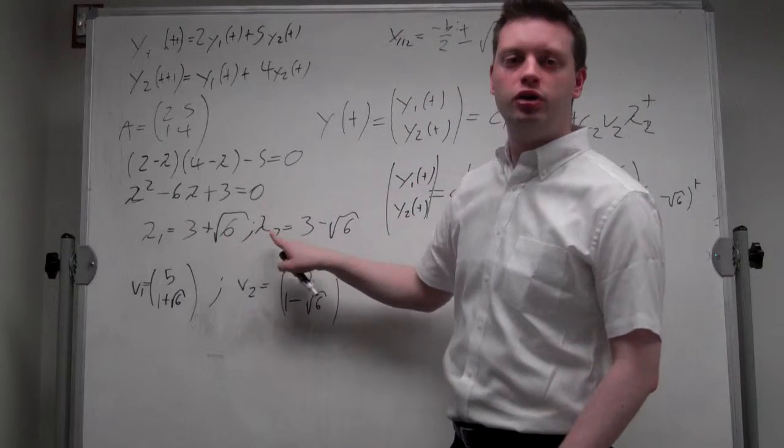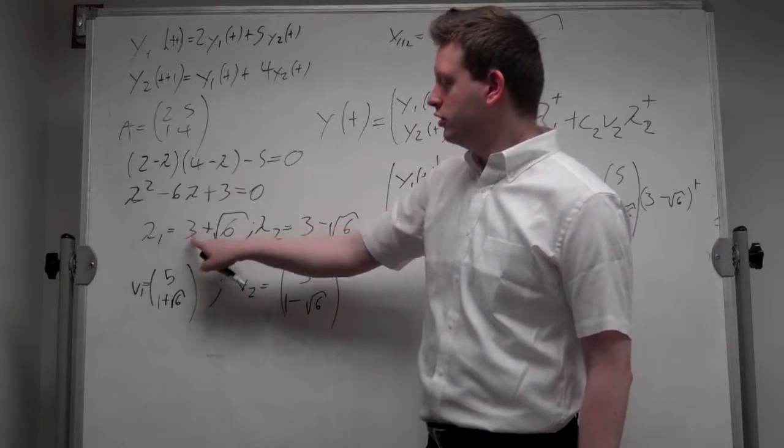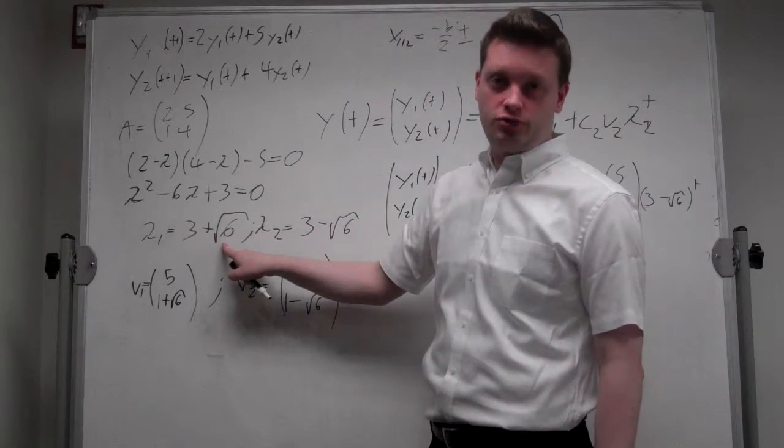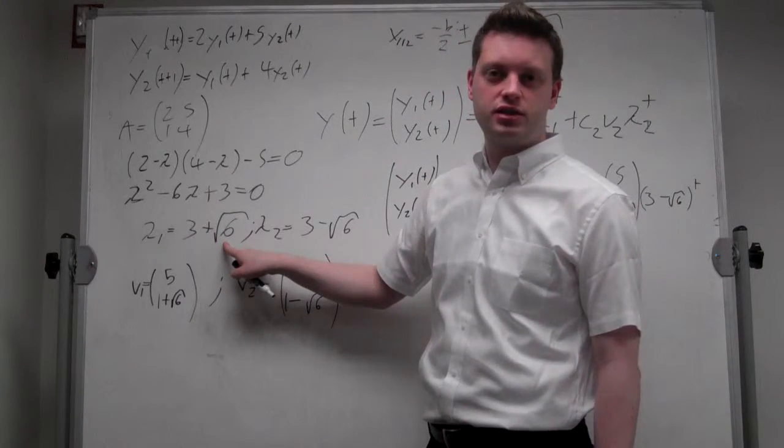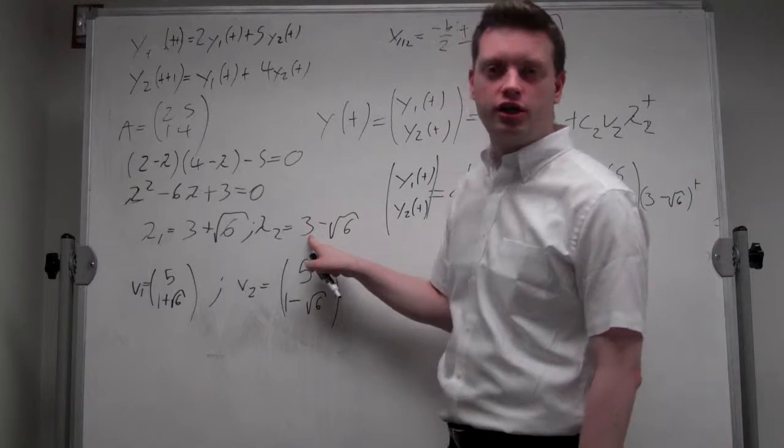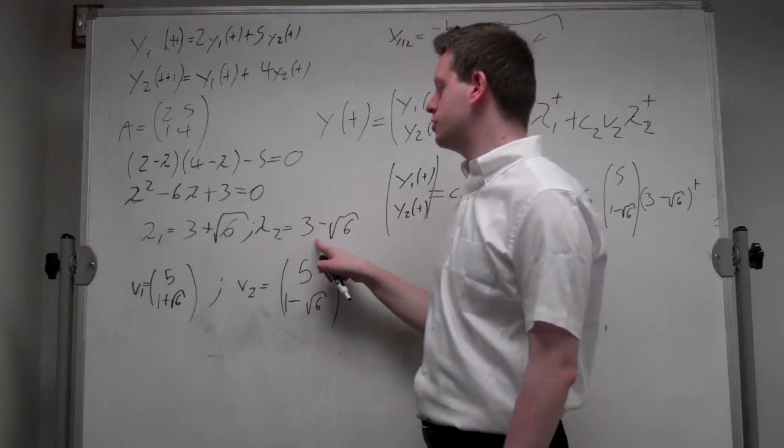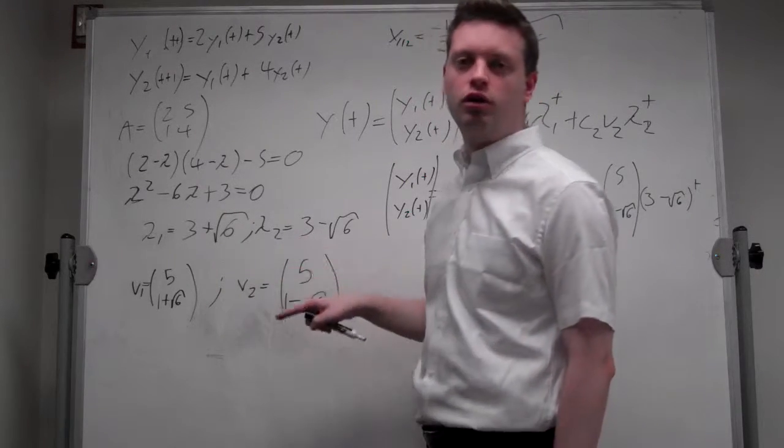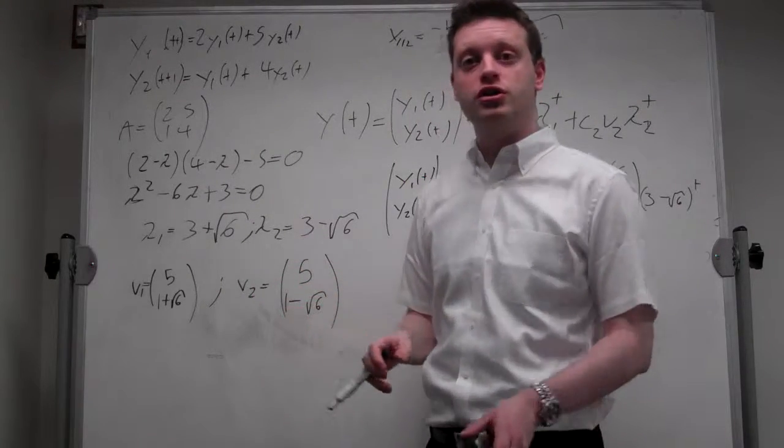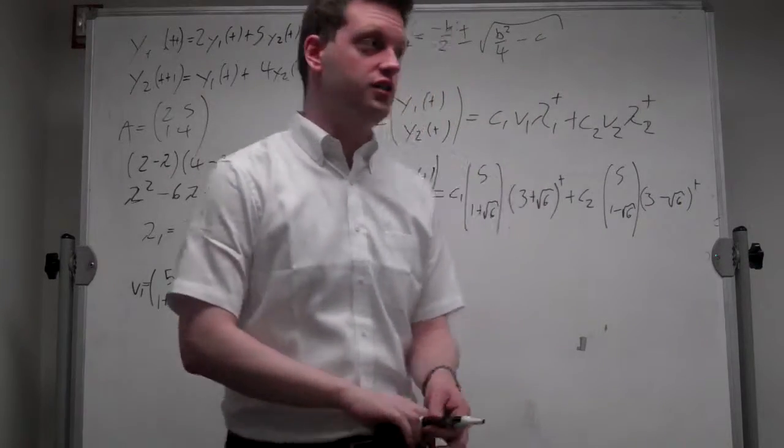If we look at the two eigenvalues, the square root of 6 is between 2 and 3, so the first eigenvalue is between 5 and 6, and the second one is between 0 and 1. So the first eigenvalue would tell it's an explosive system, while the second one would say it's actually a converging system. So, let's see how that looks in the phase diagram.